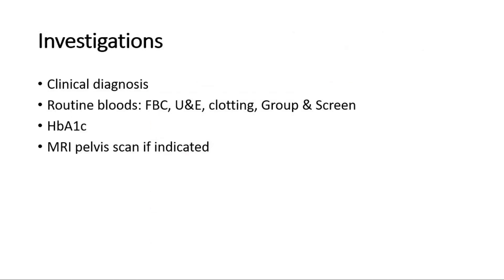It is typically a clinical diagnosis. The majority will require surgical intervention, so routine bloods including full blood count, urea and electrolytes, clotting, and group and screen are typically performed. If there are no other perianal pathology, a HbA1c should be sent to check for any underlying diabetes mellitus. For patients with atypical presentation or those suspicious for a supraelevator abscess, complex perianal fistula, or perianal Crohn's disease, then additional imaging such as MRI pelvis scan is required.